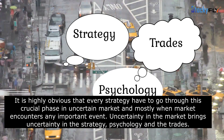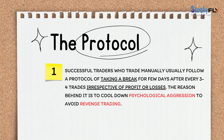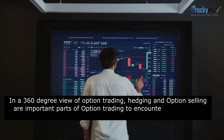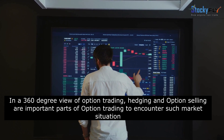Uncertainty in the market brings uncertainty in the strategy psychology and the trades. Successful traders who trade manually usually follow a protocol of taking a break for two days after every three or four trades, irrespective of profit or losses. The reason behind it is to cool down psychological aggression and to avoid revenge trading.